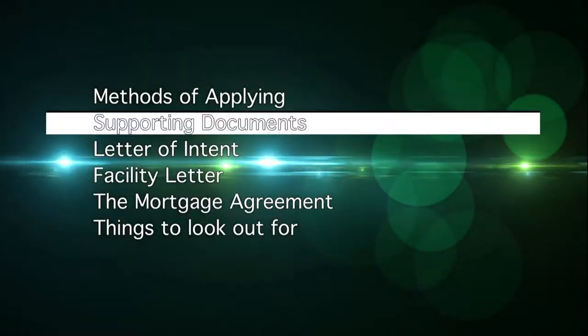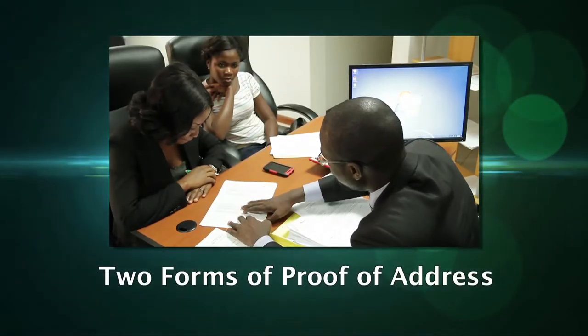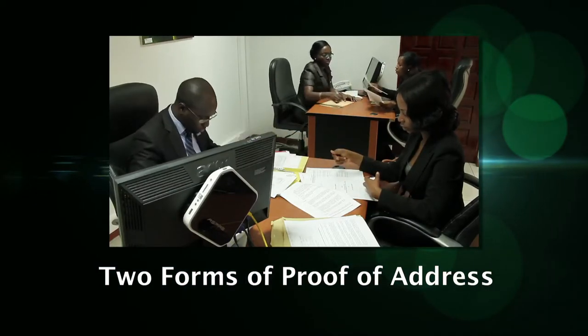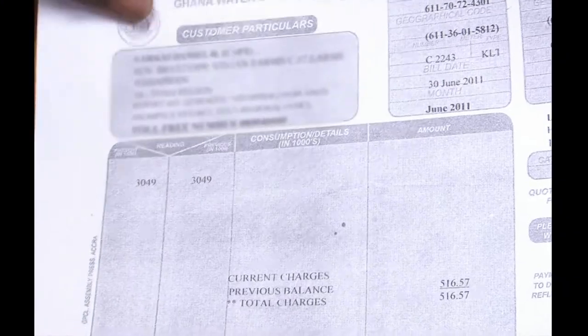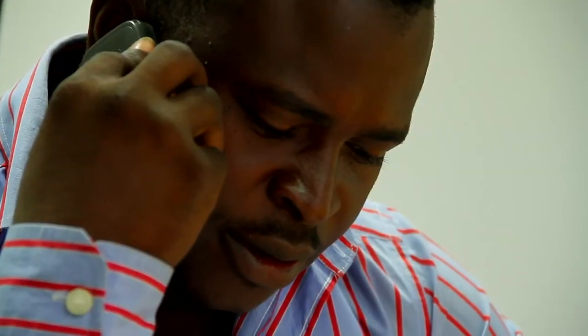Your completed mortgage application should be submitted with the necessary supporting documentation. All applicants, single and joint, need to provide the following. 1. Two forms of proof of address — any documents which confirm where you currently live, such as utility bills, tenancy agreements, or anything which confirms your current address. If you can't provide any of this, please contact your Ghana Home Loans analyst to agree on an alternative form of proof acceptable to us.